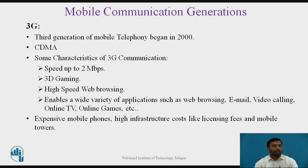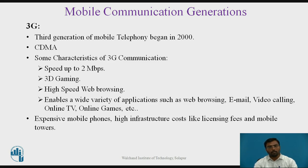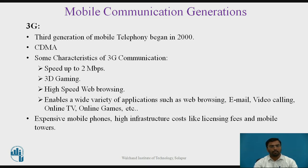Other features of 3G include 3D gaming support and high-speed web browsing compared with the second generation, enabling a wide variety of applications such as web browsing, email, video calling, online TV, and online games. While email and web browsing were supported in 2G, 3G achieved speeds up to 2 Mbps enabling online TV and games. A downside of 3G is expensive mobile phones and high infrastructure costs like licensing fees and mobile towers, as Android mobiles were introduced in this generation.